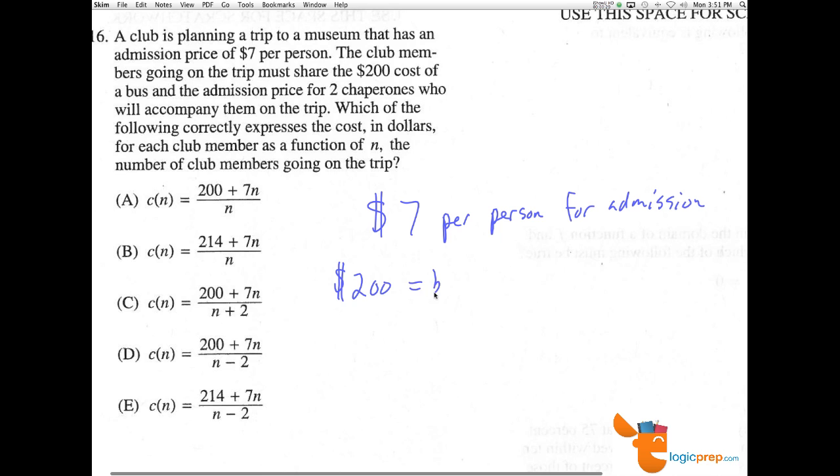We have to pay for two chaperones. These two chaperones are $7 per person, so that's 2 times $7 for their tickets, costing us $14.